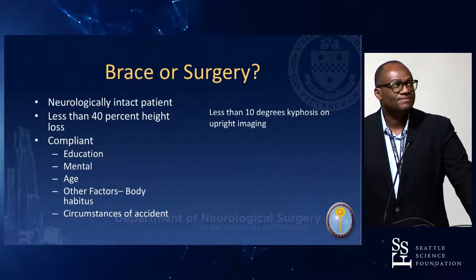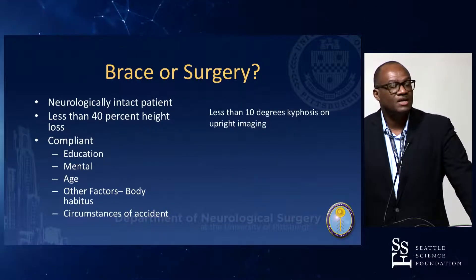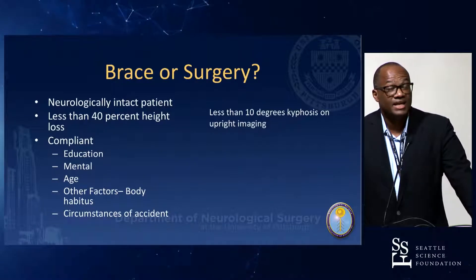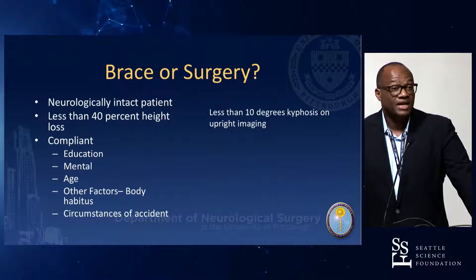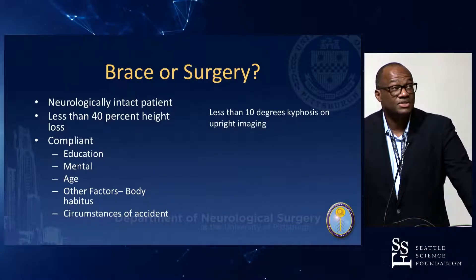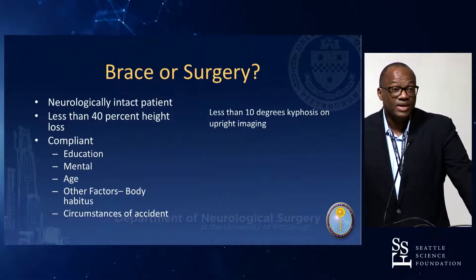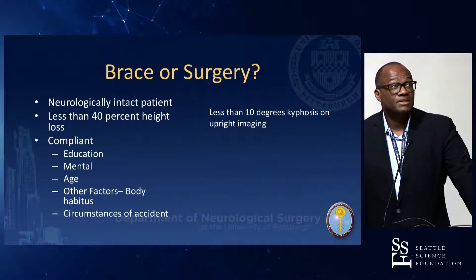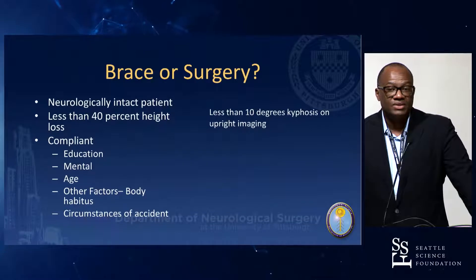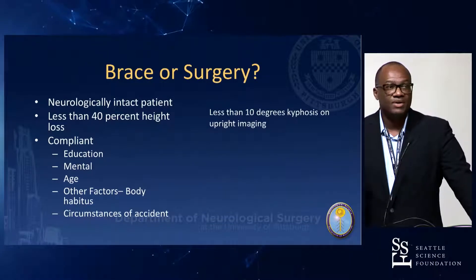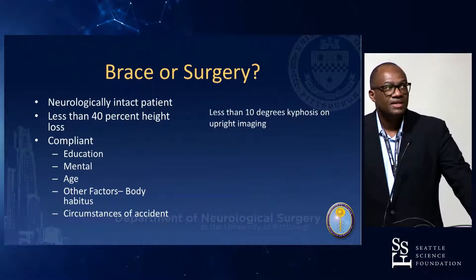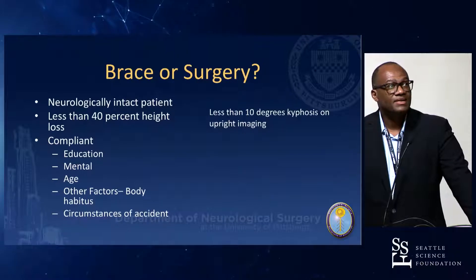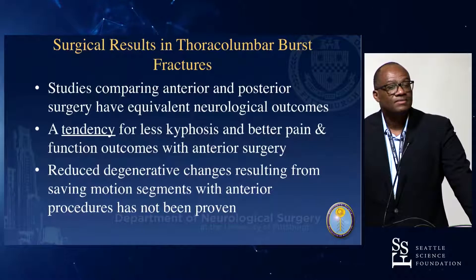Criteria for bracing: neurologically intact patient, less than 40% height loss at that level of injury. Multiple levels — less than 40% height loss in series. And also they're complying, they have the education to understand what you're saying, no ongoing active mental issues, of the age where they can comply appropriately, appropriate body habitus, and the circumstance of the accident. I always add my own personal idiot component — if I'm not sure they're going to follow through, I strongly suggest surgery. Also less than 10 degrees kyphosis on upright imaging.